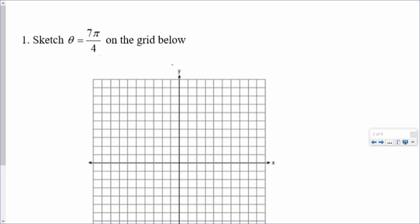If I want to sketch a radian angle, I'm going to start by converting to degrees. If I'm converting to degrees, then 180 is on top, and I'm multiplying by 180 over pi.